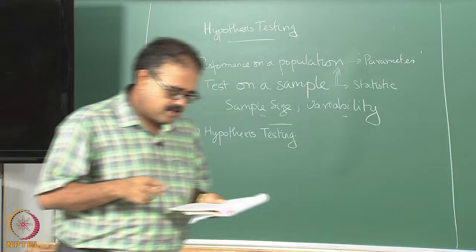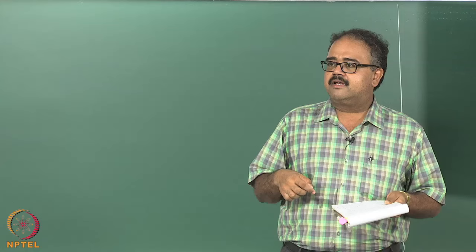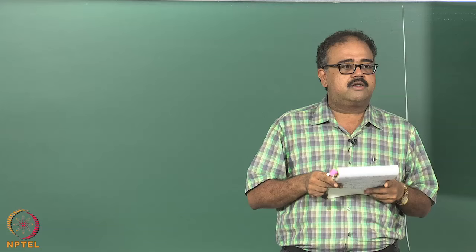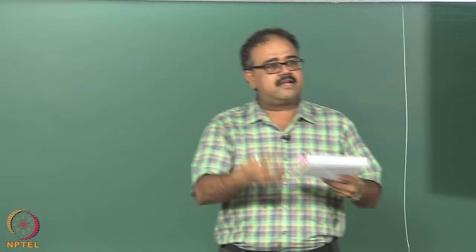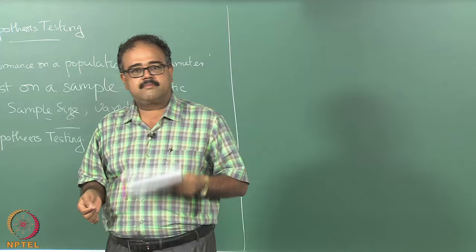Do I accept the null hypothesis or do I reject it? If I choose to accept it, what is the probability that I was wrong? I do not want to accept something if the probability of error is too high. If the probability is too large, I will simply say I cannot make a statistically sound statement about these two algorithms given the experiments you have run.